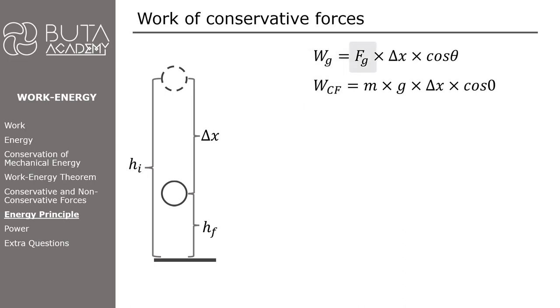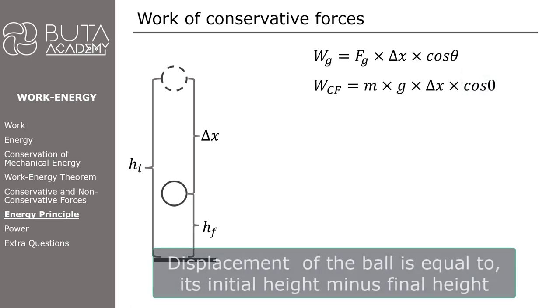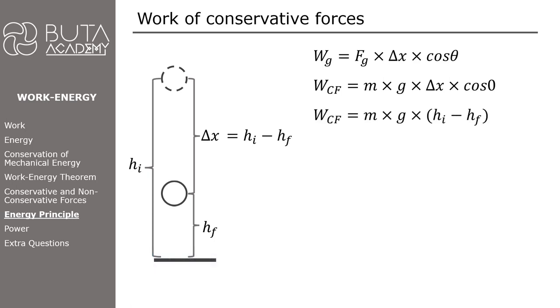Also, we can substitute Fg by mass times gravitational acceleration. Directions of displacement and force are same, therefore the angle between these two is equal to zero. Displacement of the ball is equal to its final height minus initial height. In the formula, we can ignore cosine zero as it is equal to one.